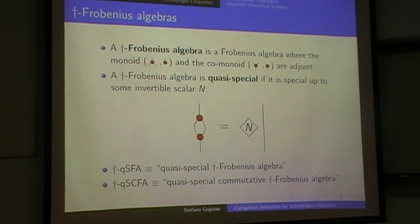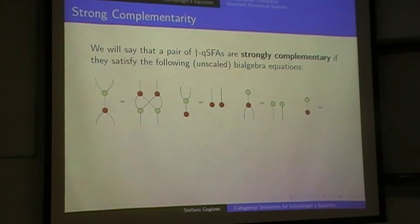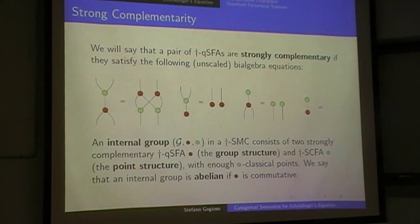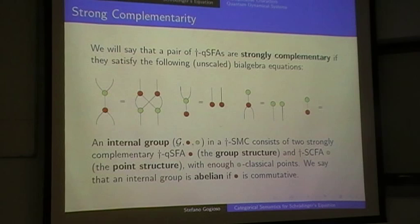We'll take strongly complementary pairs of structures, by which we mean the unscaled bialgebra equations — these should be relatively familiar by now. For our convenience, we define a notion of an internal group in a dagger-symmetric monoidal category to be a pair of structures which are strongly complementary, and the green one will be taken to be commutative and have enough classical points. There is a more general definition, but this makes things easier today.